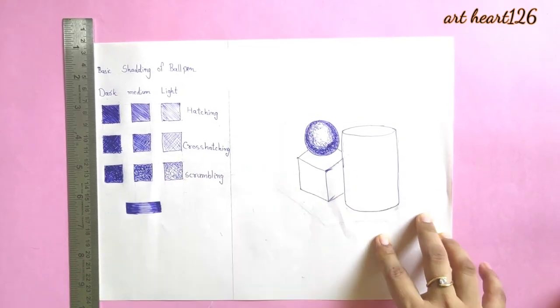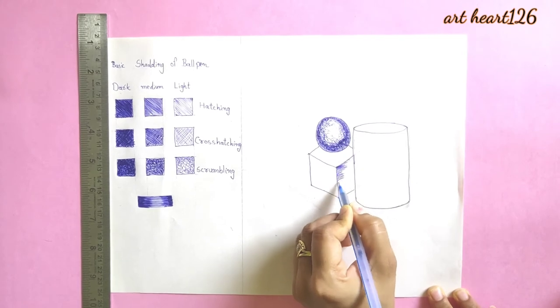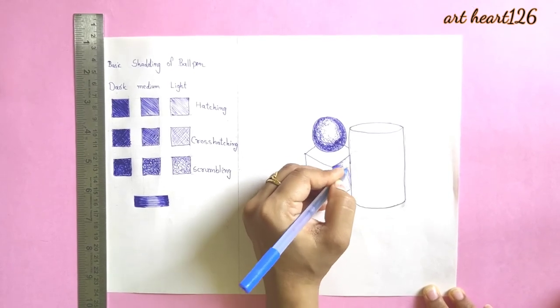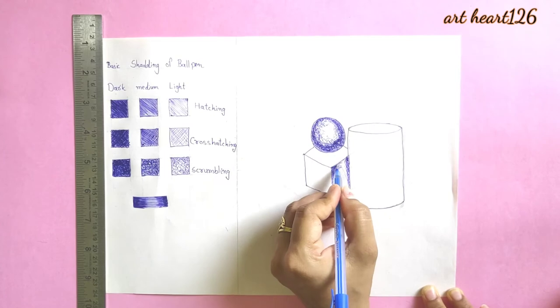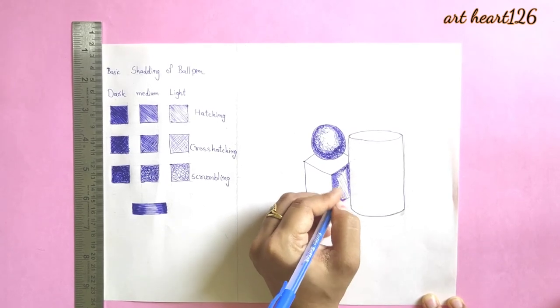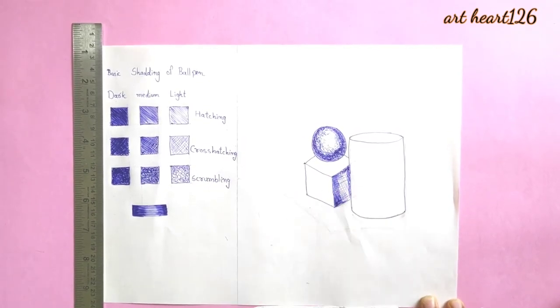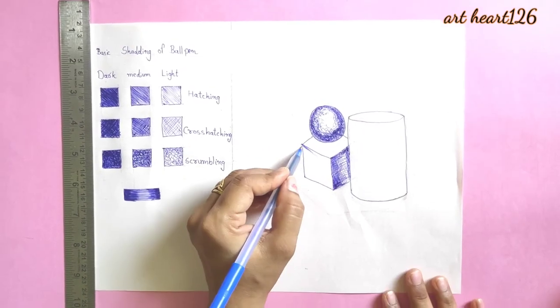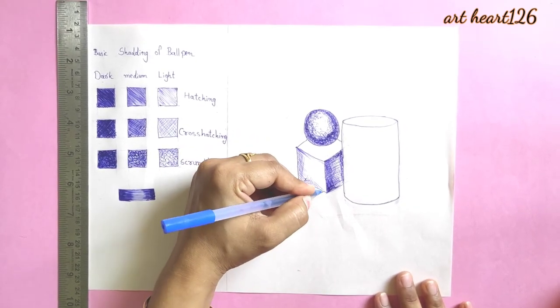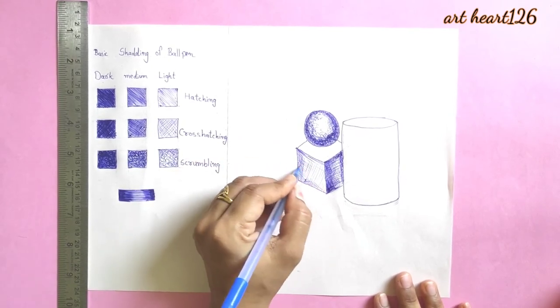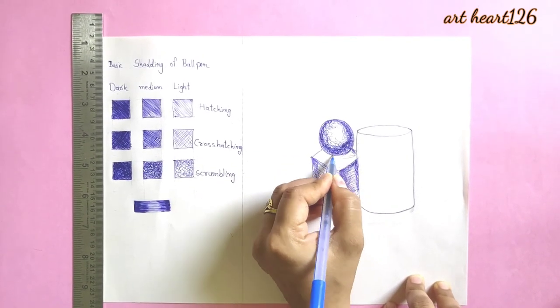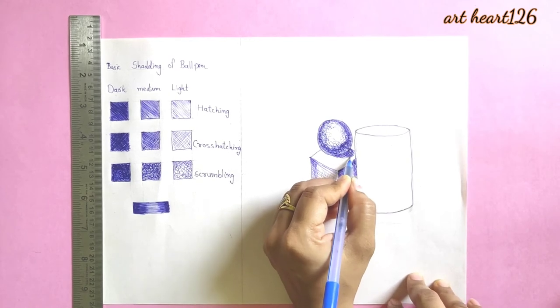Cross hatching in cube. Don't forget to use tissue paper to remove ink from point of ballpen. Do slowly. I'm doing as required - light tone, dark tone. It's cross hatching.